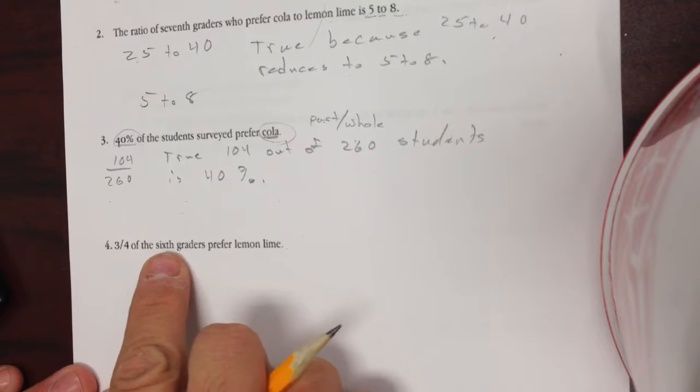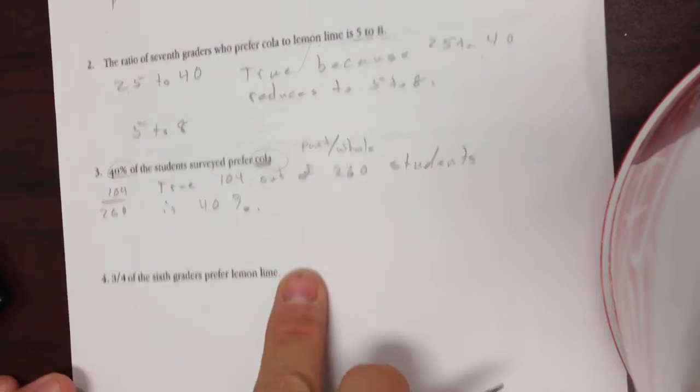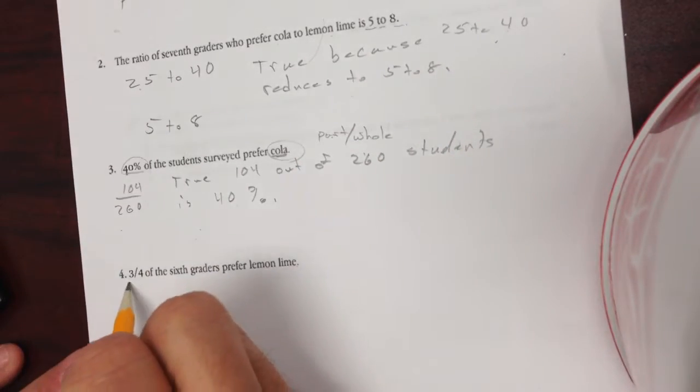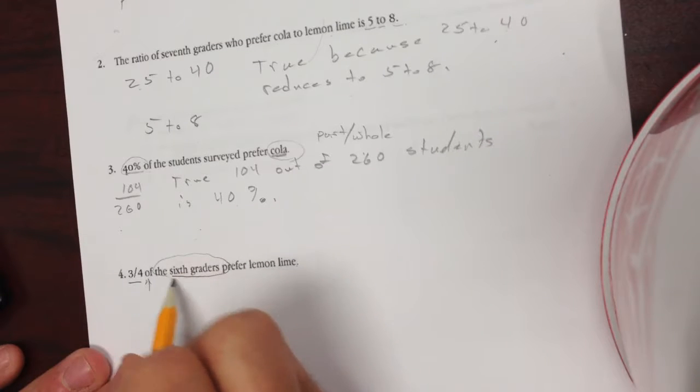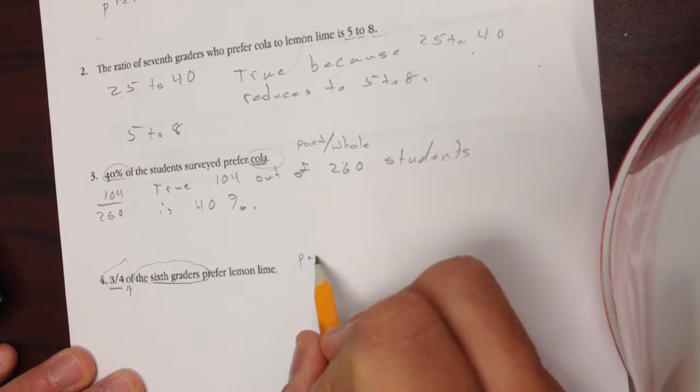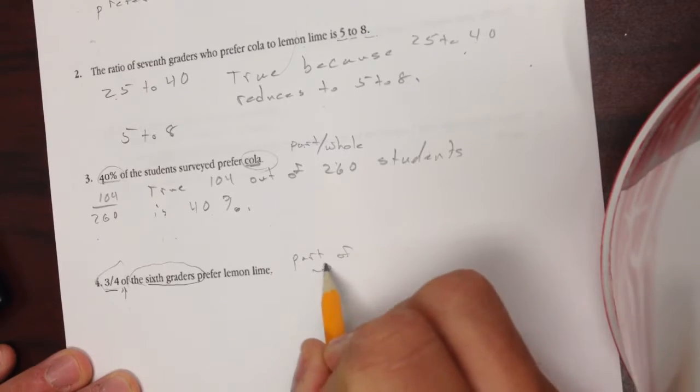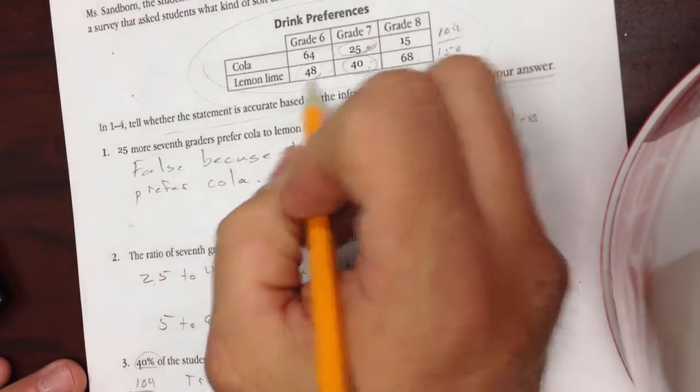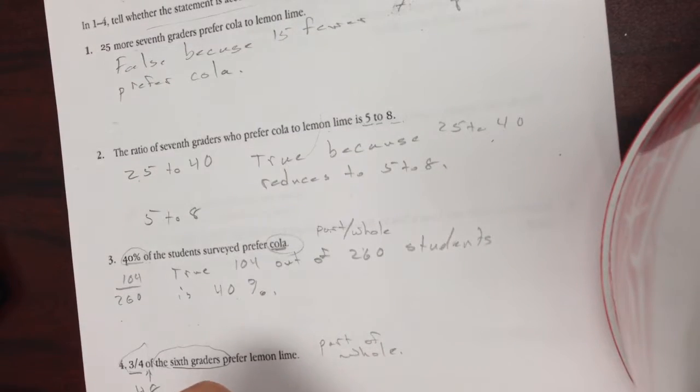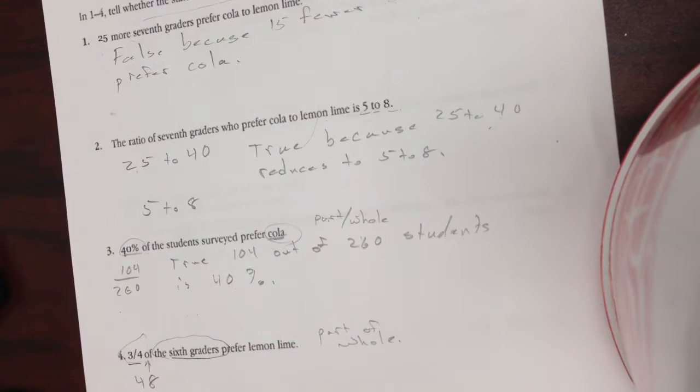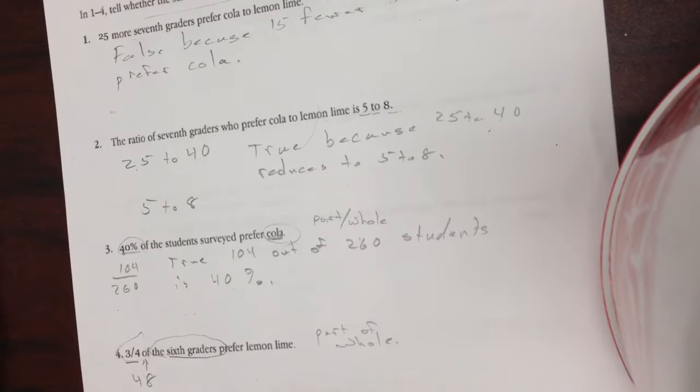Question number four. Three-fourths of the sixth graders prefer lemon lime. Now, three-fourths of the sixth grade. This is a fraction, and a fraction is part of a whole. So prefer lemon lime, 48. 48 out of how many are there total? 112. So the question is, is that the same as three-fourths? So what number goes into 48 and 112?